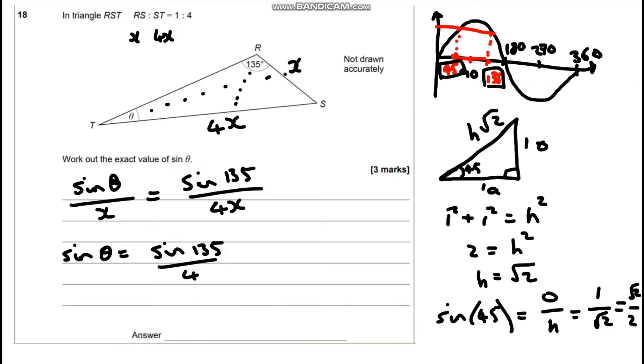So if we go back to our question here, we've got sine of theta. The sine 135, well that is root two over two. But then we've got this four on the bottom as well. So we're going to have root two over eight.